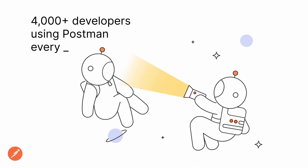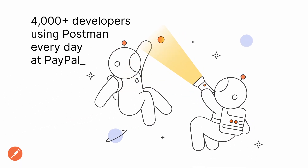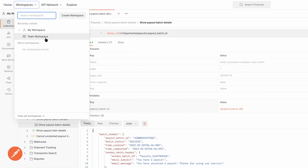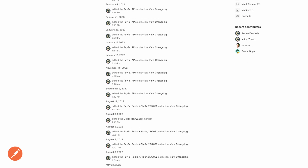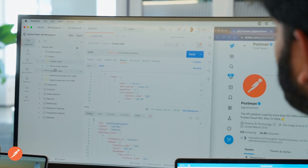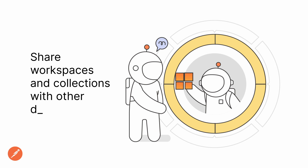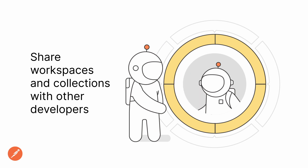We have thousands of developers using Postman. The Postman collections and workspaces have become part of our everyday vocabulary. We use that language to communicate with each other about the APIs and their behavior. We very often share workspaces and collections to remove the friction — let's invoke the API, let's see it in action, and understand how it behaves.